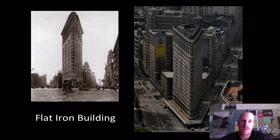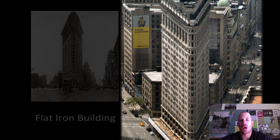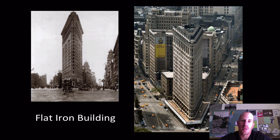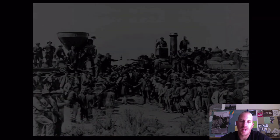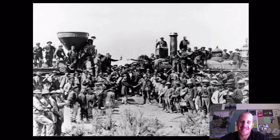Steel also allowed for the Flat Iron Building to be developed — named for its triangular shape, similar to a flat iron from the late 1800s. Without steel, we would still have to build outward rather than upward. And notably, New York City was not the first city to have skyscrapers — the first skyscraper was built in Chicago, Illinois. Without the invention of steel, electricity, and the elevator, this type of building simply wouldn't be possible. We also have the completion of the transcontinental railroad meeting at Promontory Point, Utah in 1869, finally linking east and west by rail.